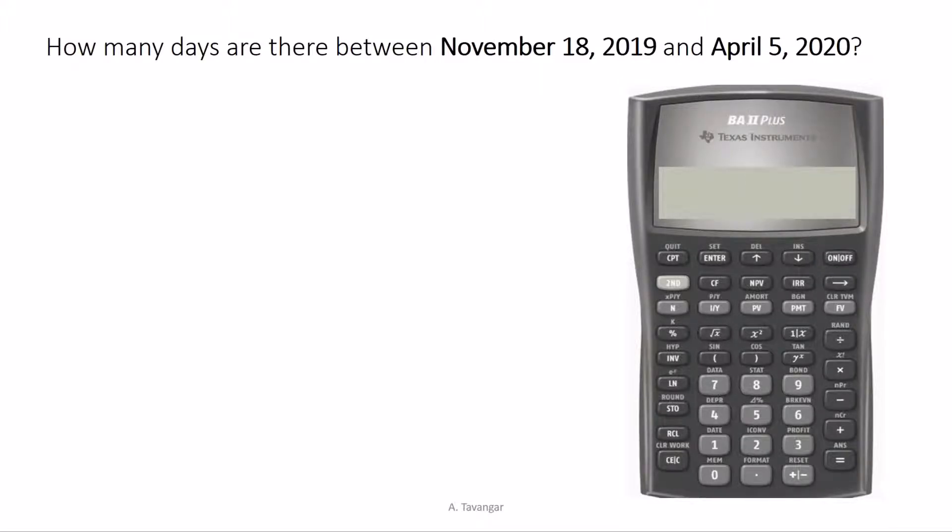So in this problem we are given the dates of November 18, 2019 and April 5, 2020 and then we are to compute the number of days between them. In order to compute the DBD or days between the dates,